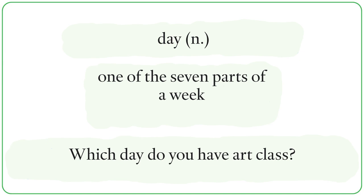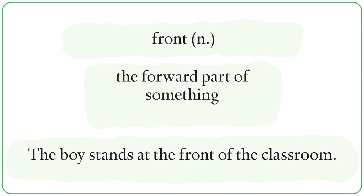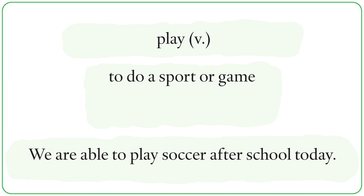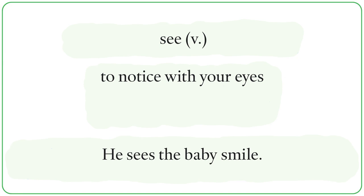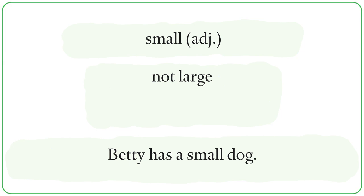Cook. Dad cooks dinner for us. Day. Which day do you have art class? Drink. What kind of juice do you want to drink? Front. The boy stands at the front of the classroom. Great. Nick does a great job on tests. Play. We are able to play soccer after school today. See. He sees the baby smile. Send. I send about ten emails a day. Small. Betty has a small dog.